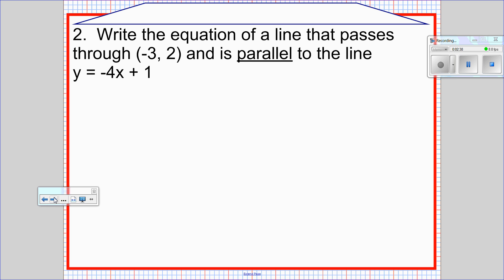Example 2. Write the equation of a line that passes through negative 3, 2 and is parallel to the line y equals negative 4x plus 1. Once again, parallel lines have the same slope. So I'm going to isolate my slope. And then I'm going to see what other information I have.